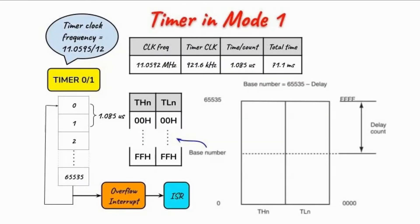Timer in mode 1 means that we have a timer that will count from 0 to 65535. On the next count, an overflow interrupt will occur and the interrupt service routine will be executed. Then the counter is reset and the process continues.